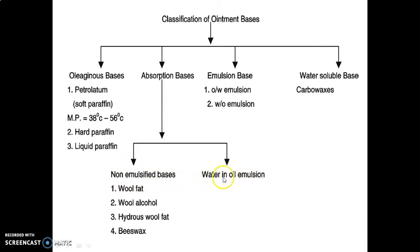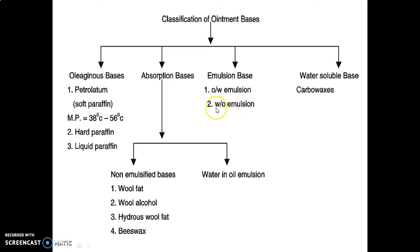In non-emulsified bases, there are four types — for example, wool fat, wool alcohol, hydrous wool fat, and beeswax. Emulsion bases are of two types: O/W (oil-in-water) emulsion, in which oil acts as the internal phase and water acts as the external phase; and W/O (water-in-oil) emulsion, in which water acts as the internal phase and oil acts as the external phase. Water-soluble bases include carbowaxes.